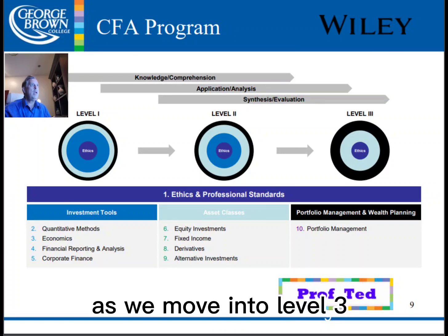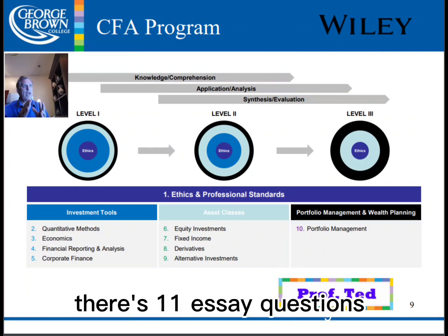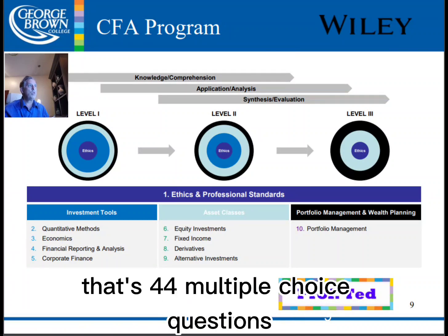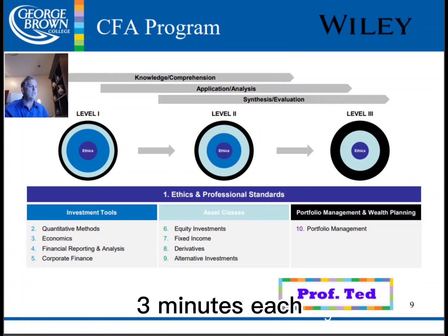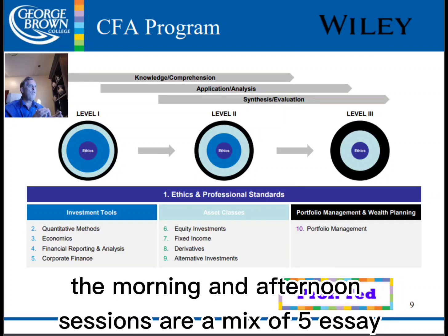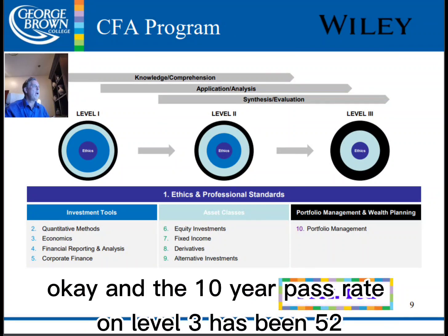As we move into level three, that's the synthesis and evaluation. There are 11 essay questions and 11 item sets — so 11 item sets, that's 44 multiple-choice questions, three minutes each. Starting in 2023, the morning and afternoon sessions are a mix of five essay and six item sets, or vice versa. The 10-year pass rate on level three has been 52%.